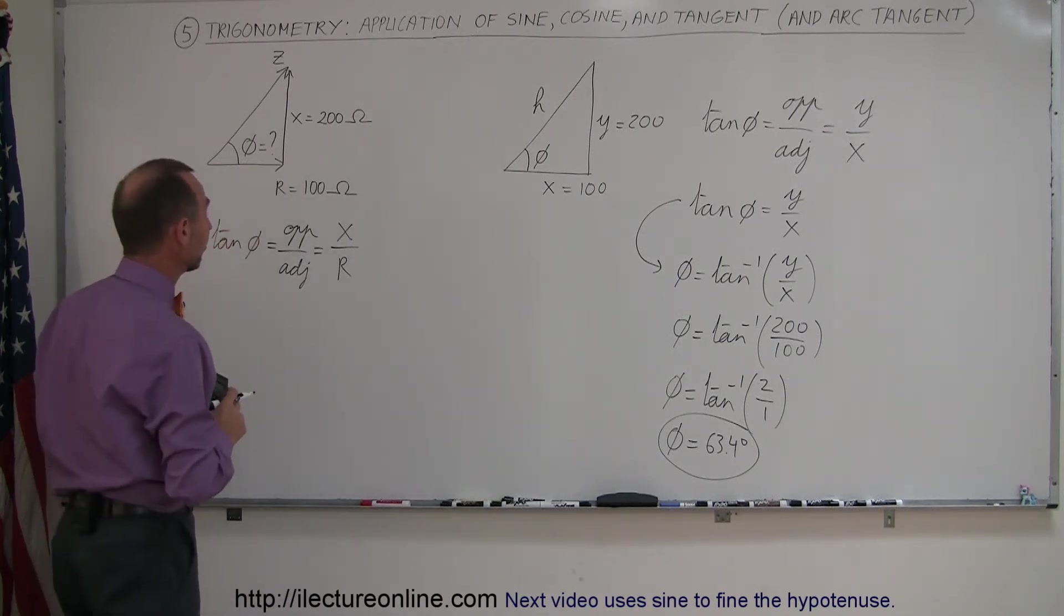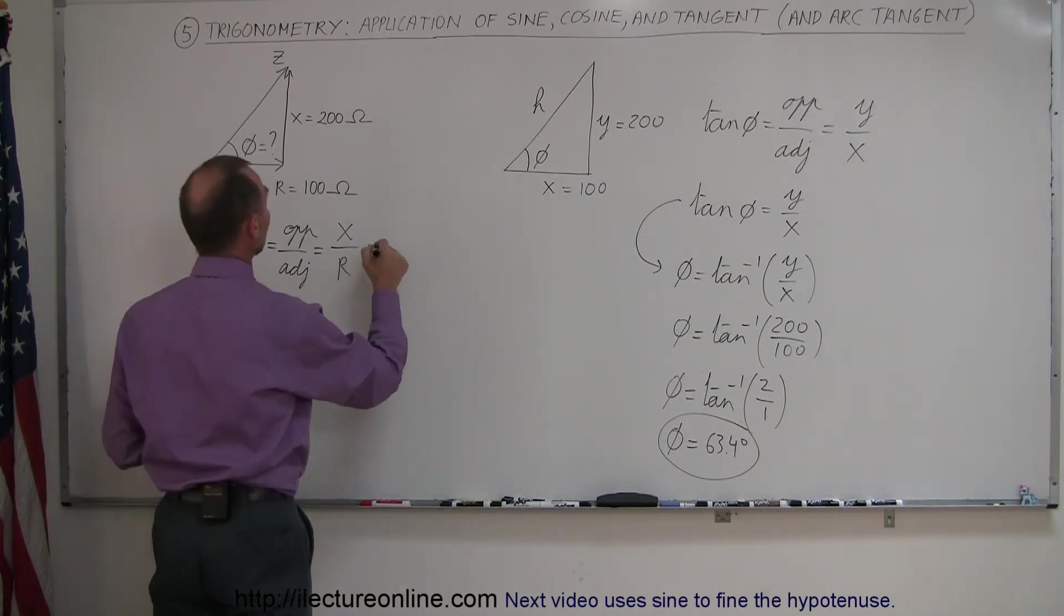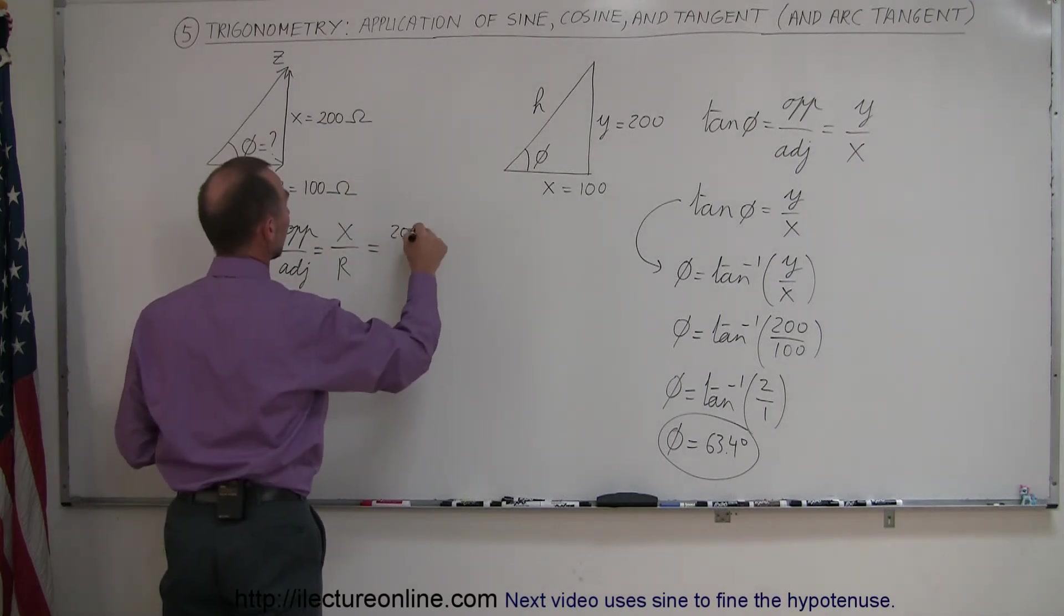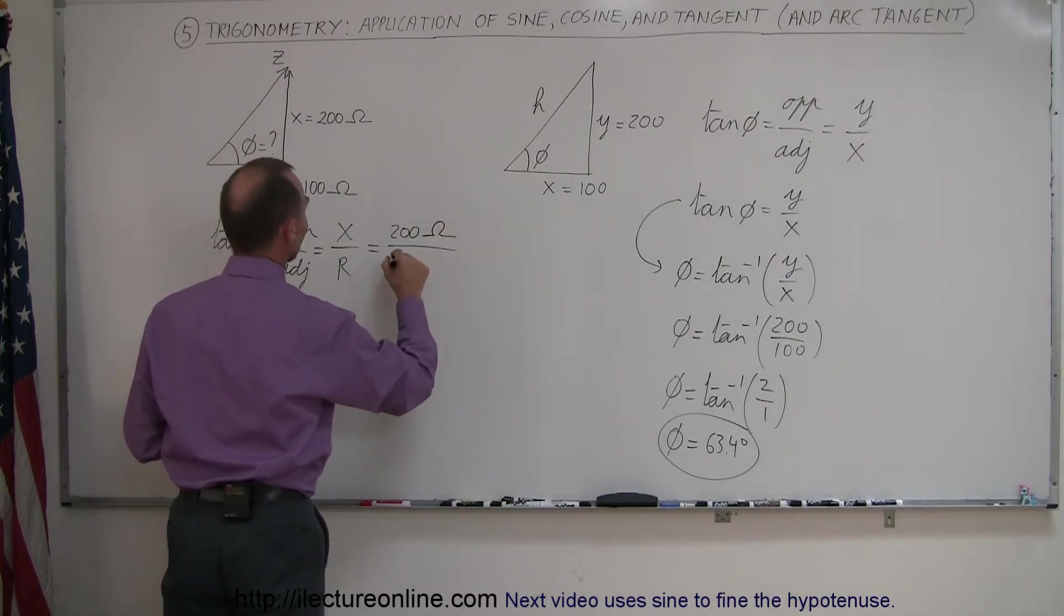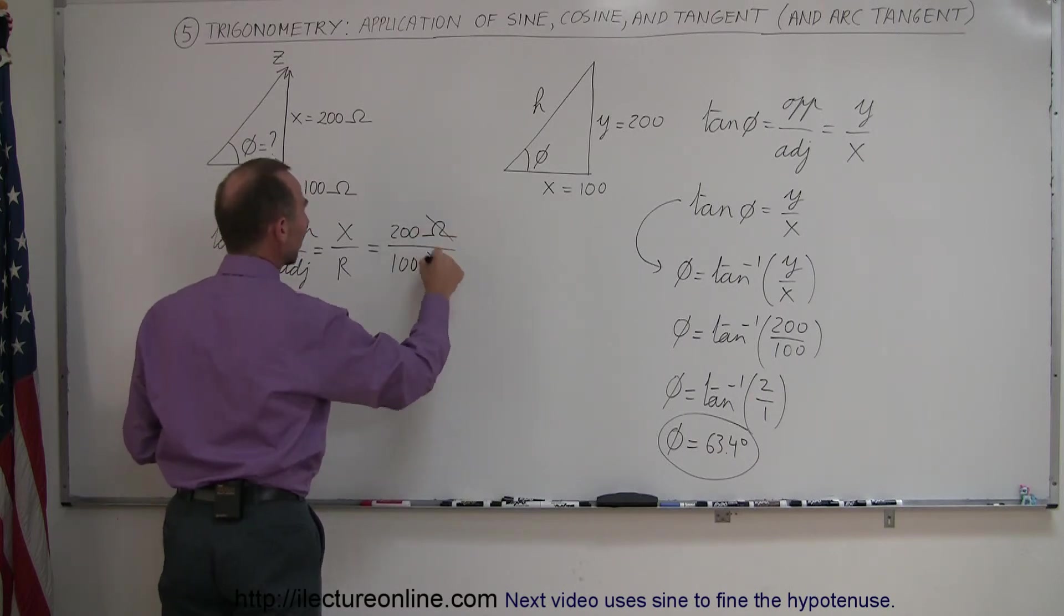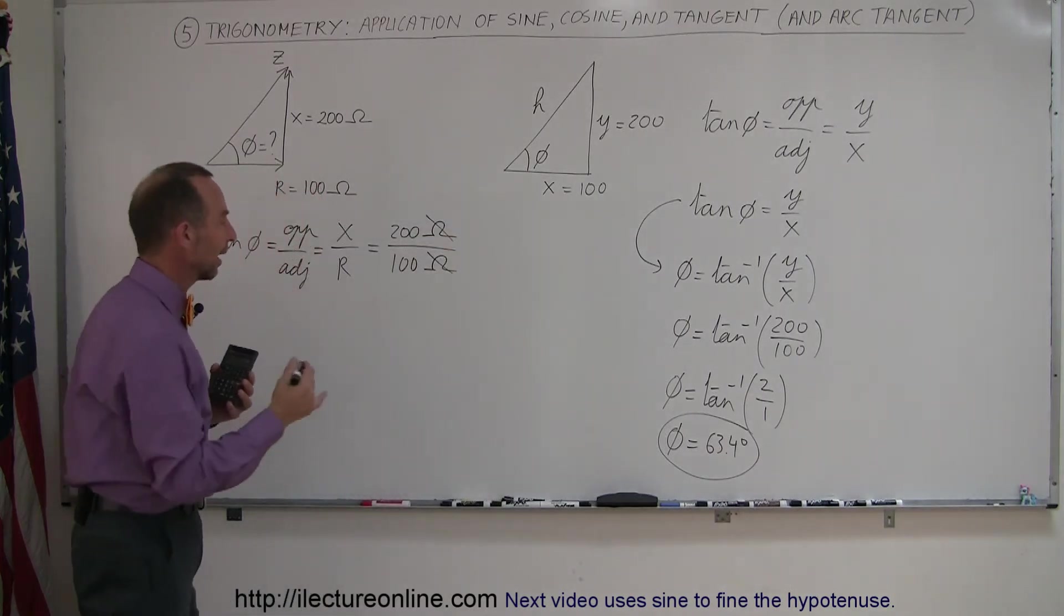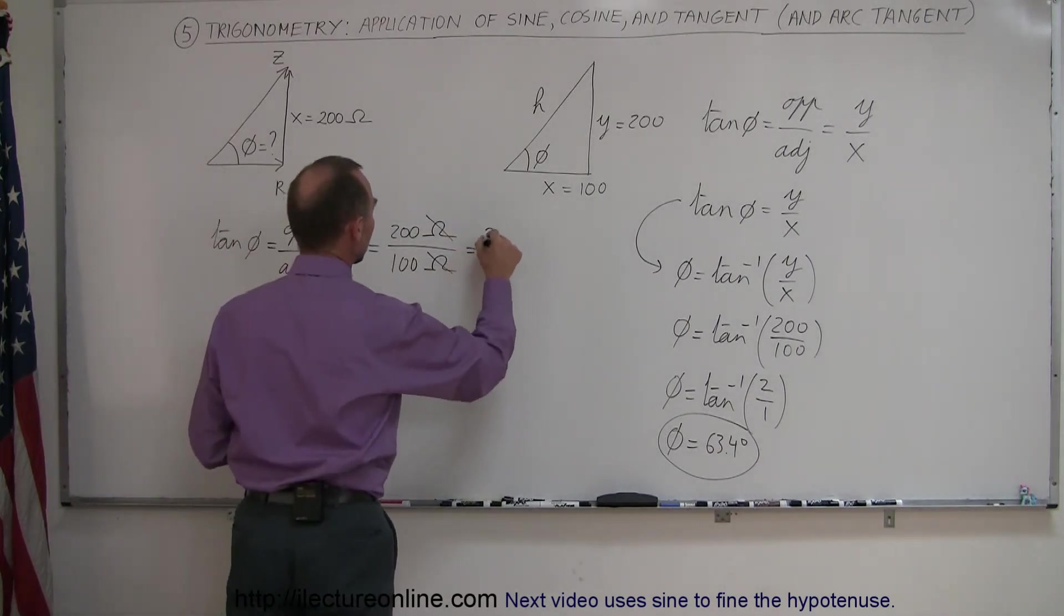Since this is with circuitry, electronic circuitry, you don't need to know what that is. But in this case, x was 200 ohms, and r was equal to 100 ohms. Now, you can see that ohms and ohms cancel out, so you don't have to worry about the units.